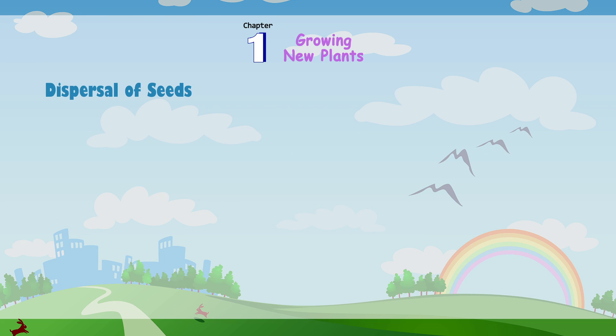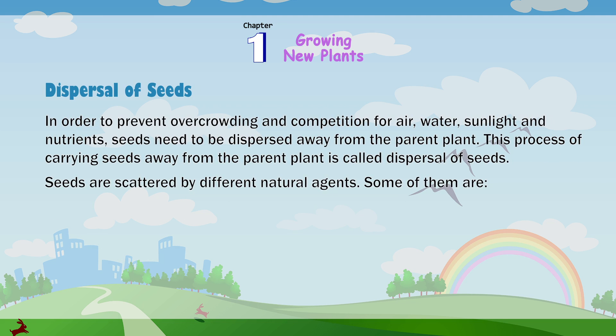Dispersal of seeds. In order to prevent overcrowding and competition for air, water, sunlight, and nutrients, seeds need to be dispersed away from the parent plant. This process of carrying seeds away from the parent plant is called dispersal of seeds.